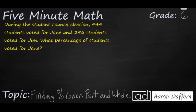During the student council election, 444 students voted for Jane, and 296 students voted for Jim. What percentage — that's what we're looking for — of students voted for Jane?